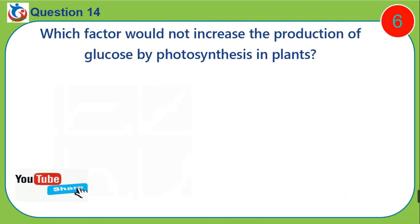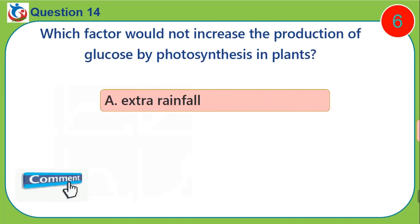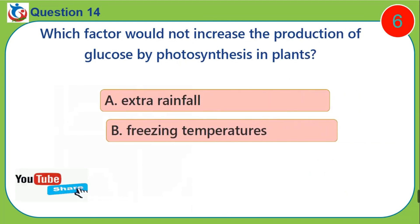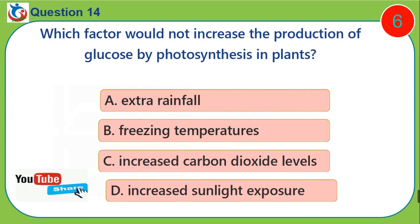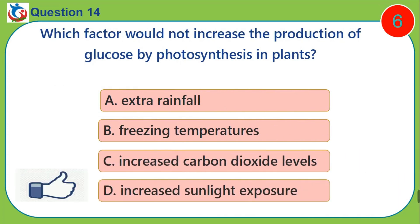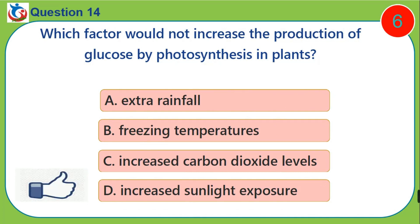Question fourteen: Which factor would not increase the production of glucose by photosynthesis in plants? A) extra rainfall, B) freezing temperatures, C) increased carbon dioxide levels, D) increased sunlight exposure.